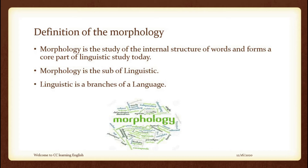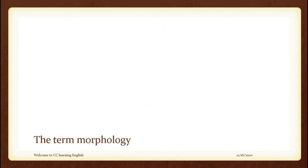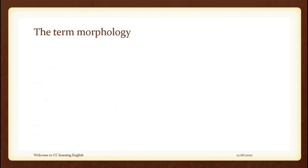So morphology is the study of internal structure of words and forms — a core part of linguistic study. Morphology is a sub-subject of linguistics, and linguistics is a branch of language. That is the definition of morphology. I hope you get it, and now we're going to move on to the next part.